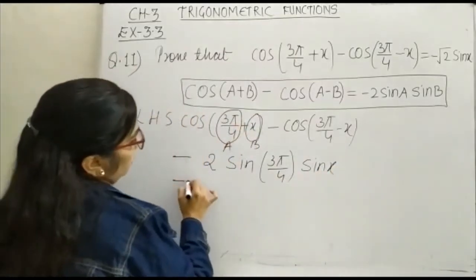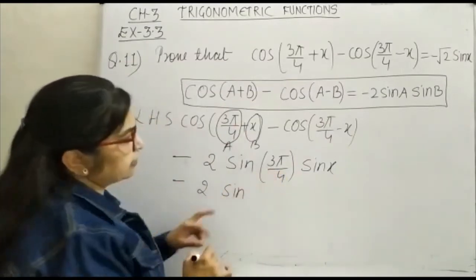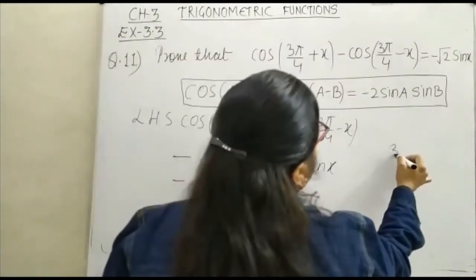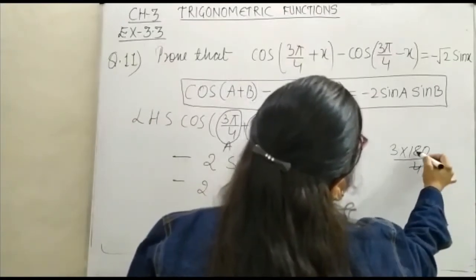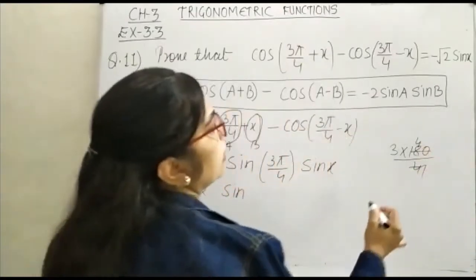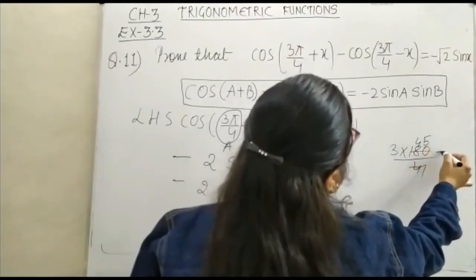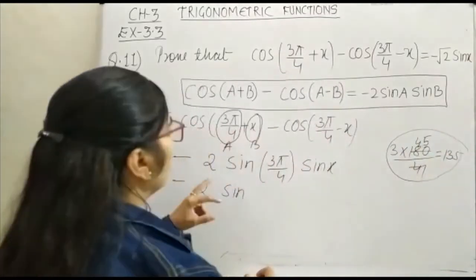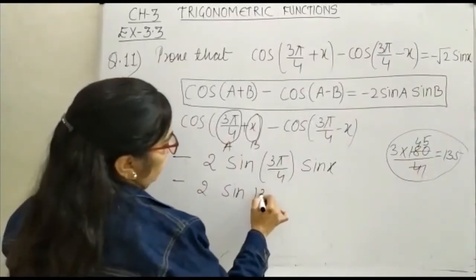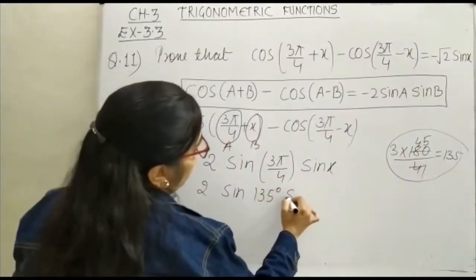You can see here minus 2 sin, you can convert this term, that is 3 times 180 upon 4, so it is 4 ones are 4, 4 fours are 16 and 4 fives are 20, so this becomes 135 degrees. Now this is 135 degrees sin x.